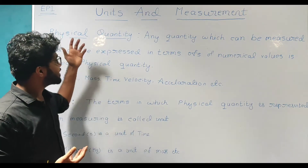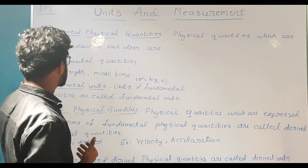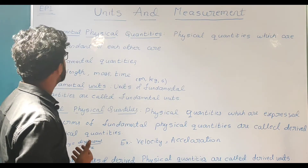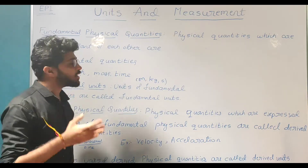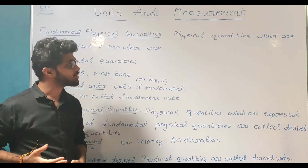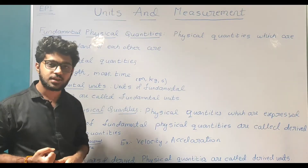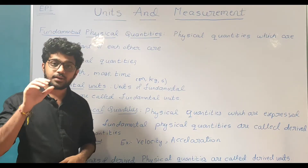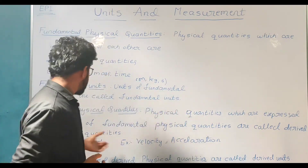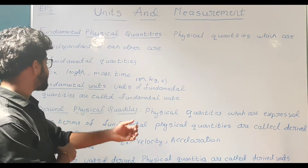Now let us understand what are fundamental physical quantities and what are fundamental units, and also what are derived physical quantities and derived units. Fundamental physical quantities are physical quantities which are independent of each other. Physical quantities which are expressed in terms of fundamental physical quantities are called derived physical quantities.